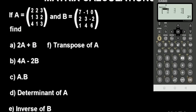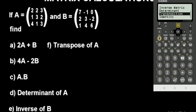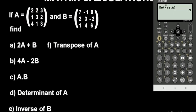For the determinant of Matrix A, go to catalog, matrix option, then matrix calculations. Navigate down to determinant and press execute. Enter Mat A and close the brackets, then press execute. The result is negative 9 — that is the determinant of this matrix.